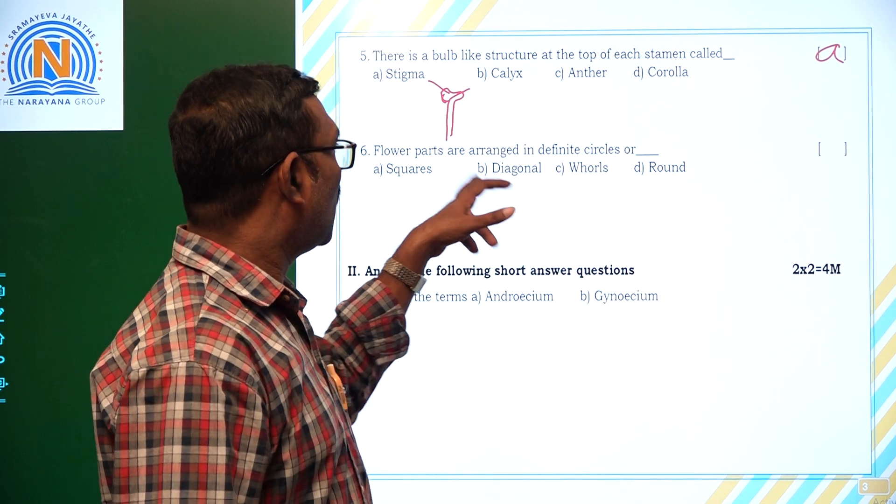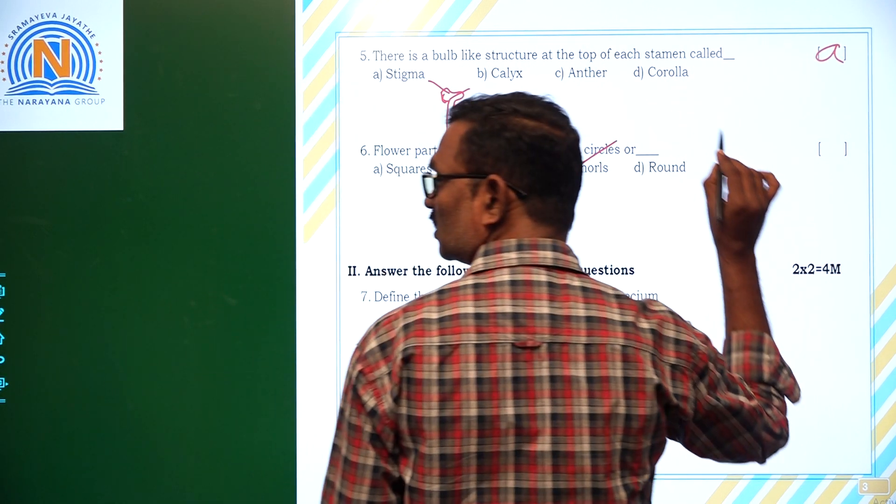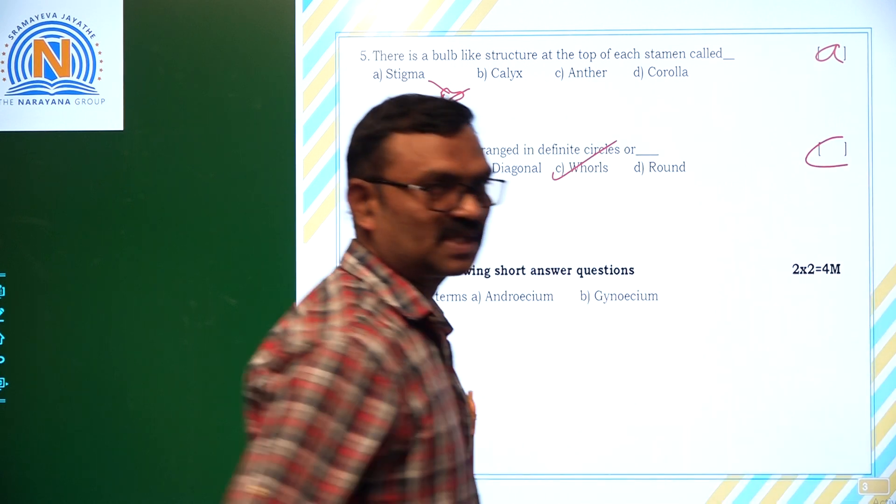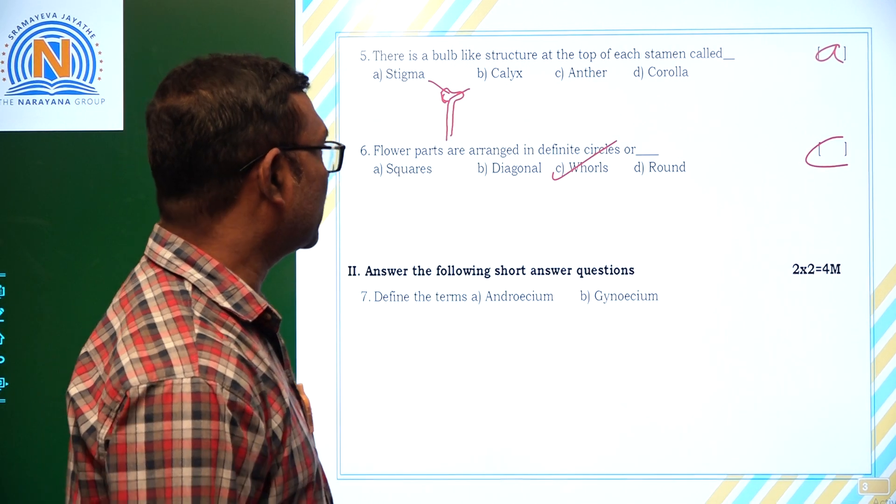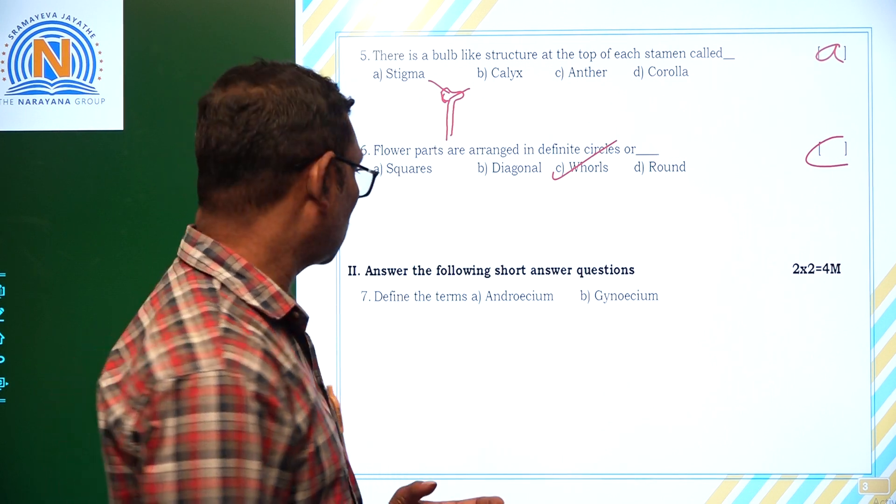Flower parts are arranged in definite circles or what are those called? Whorls. They are called whorls, option C. Circles are whorls. Now, it is time for discussion of short answer questions.